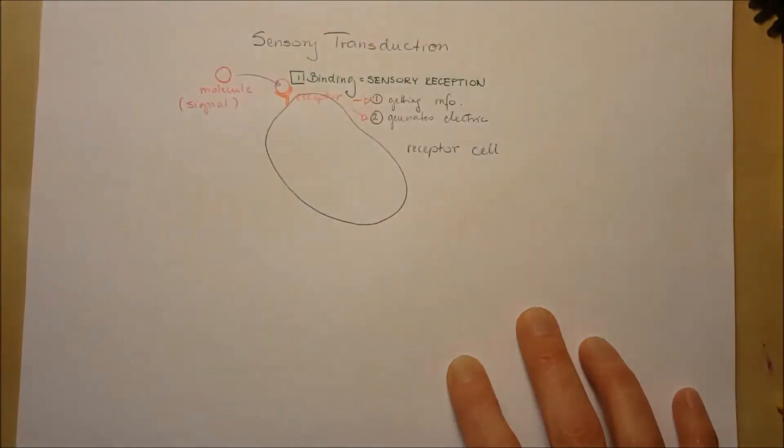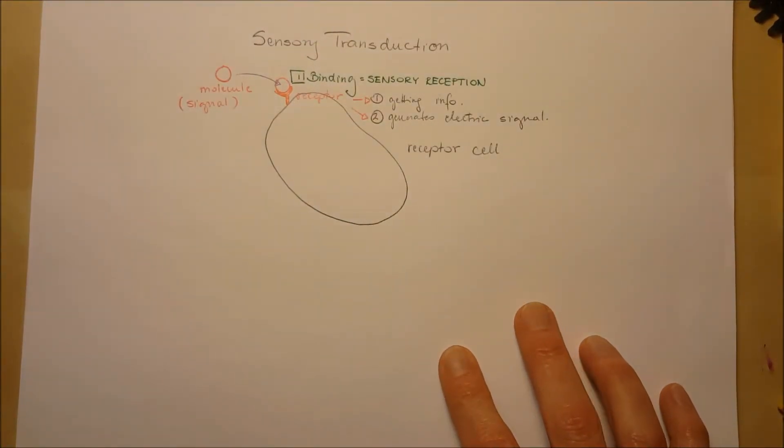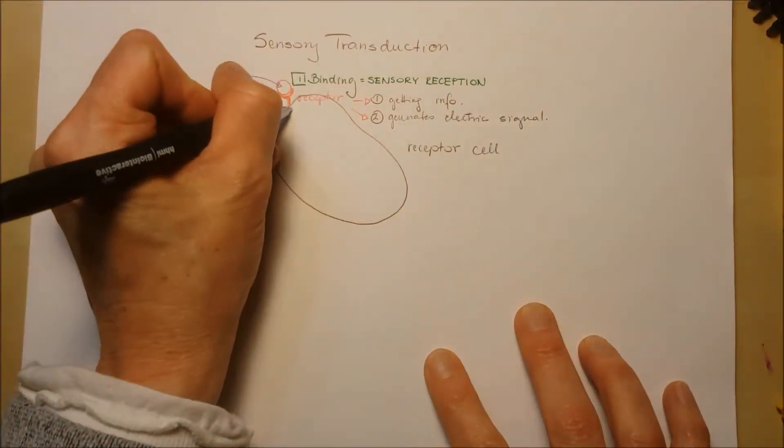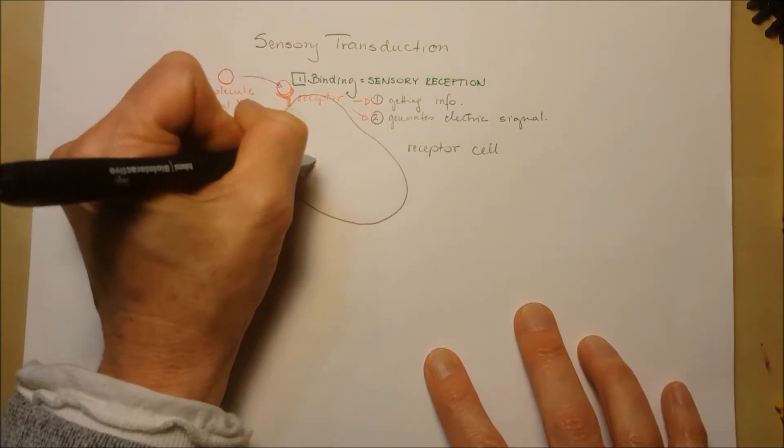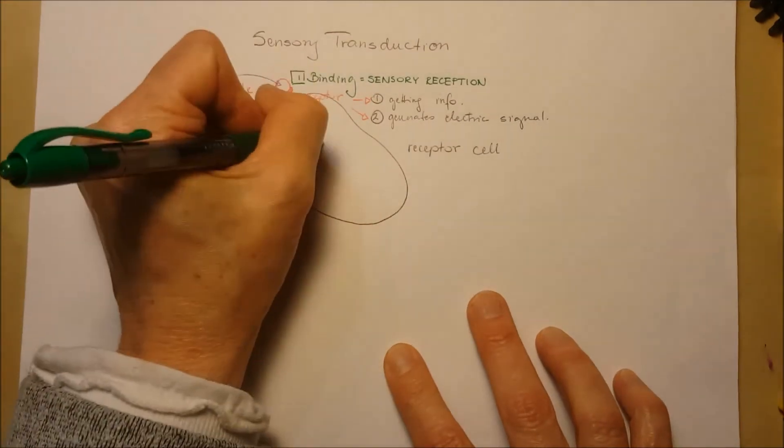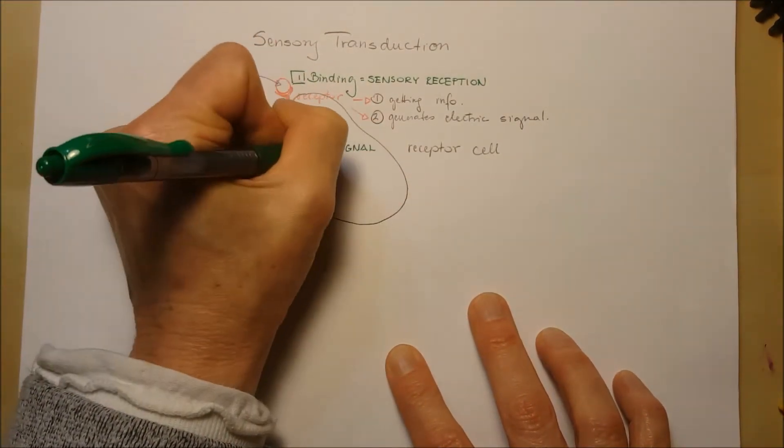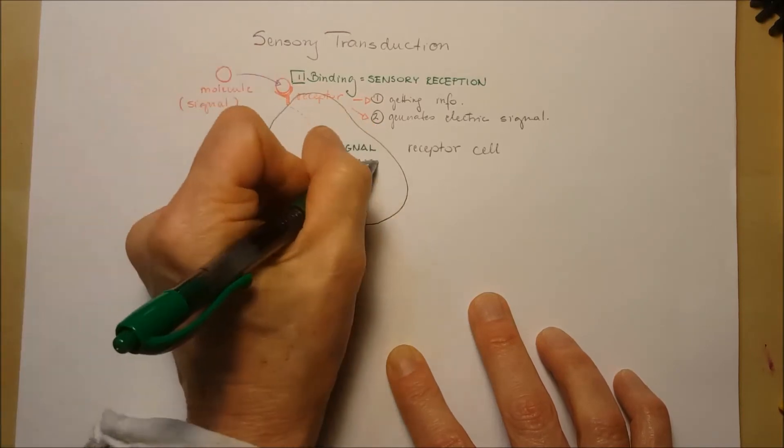From sensory reception, we learned about how the receptor will change its configuration and start to have a cascade signal transduction in the cell. And this will be the signal transduction.